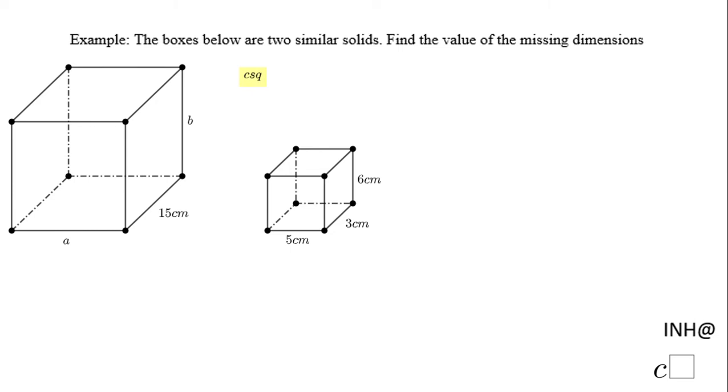Welcome back to INH at C squared. In this example we have two similar boxes and we need to find the value of the missing dimensions, a and B. First thing you want to do is find the scale factor between these two similar solids.